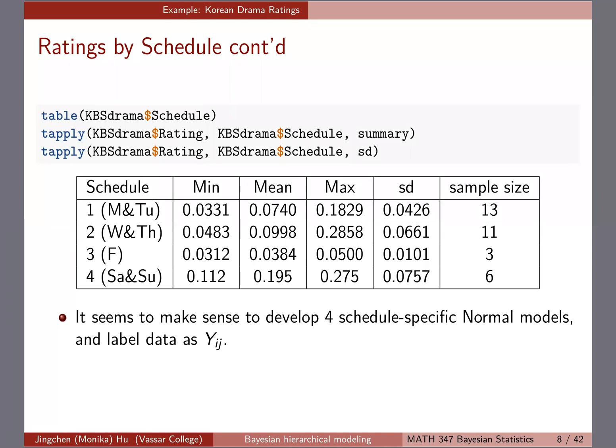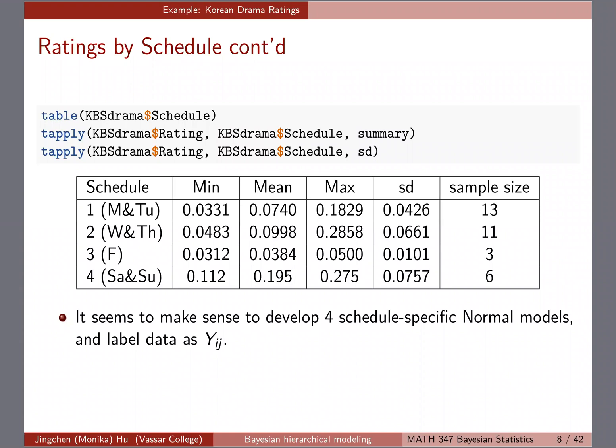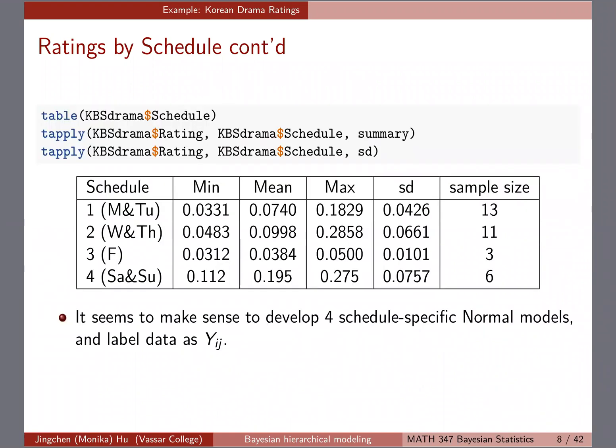This is typically what we call exploratory data analysis. You look at the data a little bit before you decide on your modeling approach. Here I'm presenting you the density plots of four different rating schedules. Let me show you the summary in a table—that may also be helpful when thinking about modeling approaches. The table shows the minimum, the mean, the max, the standard deviation, and the sample size of the four different schedules. Consider this together with the plot and spend one more minute talking about the approaches you can think of.